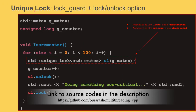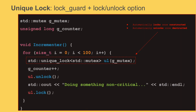Up next: unique_lock. Unique_lock is basically lock_guard plus an option to manually lock and unlock. Again, as soon as it's created, the mutex locks automatically. If you go out of scope, the destructor unlocks automatically. But compared to lock_guard, you can also optionally call lock and unlock if you want. So it gives you RAII plus the flexibility to manually manage locking.